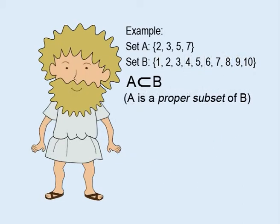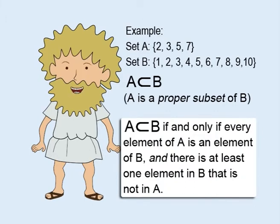Actually, in this case, set A is also a proper subset of B. Set A is a proper subset of B, if and only if every element of A is an element of B, and there is at least one element in B that is not in A.